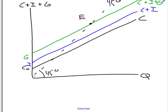That is now the point. Q star is the equilibrium level of income because that's where C plus I plus G is equal to Q.